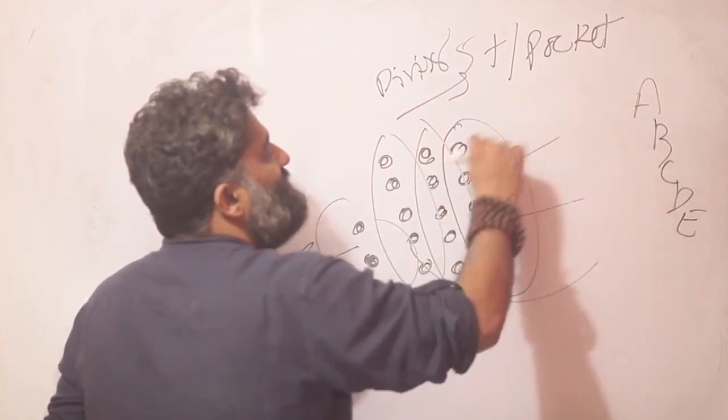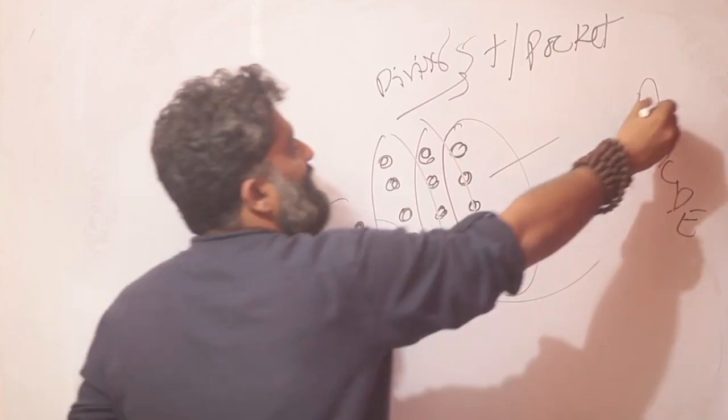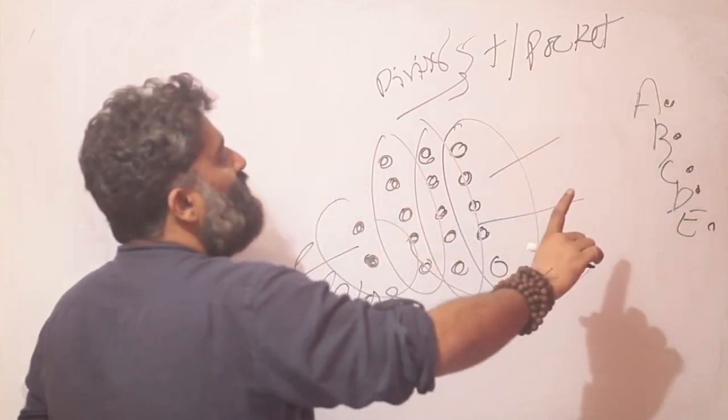You would say, okay, let me start just giving. So you will say 1, 1, 1, 1, 1, one round will be over, right? Each will get 1 toffee and you will say, okay, 1 round over.